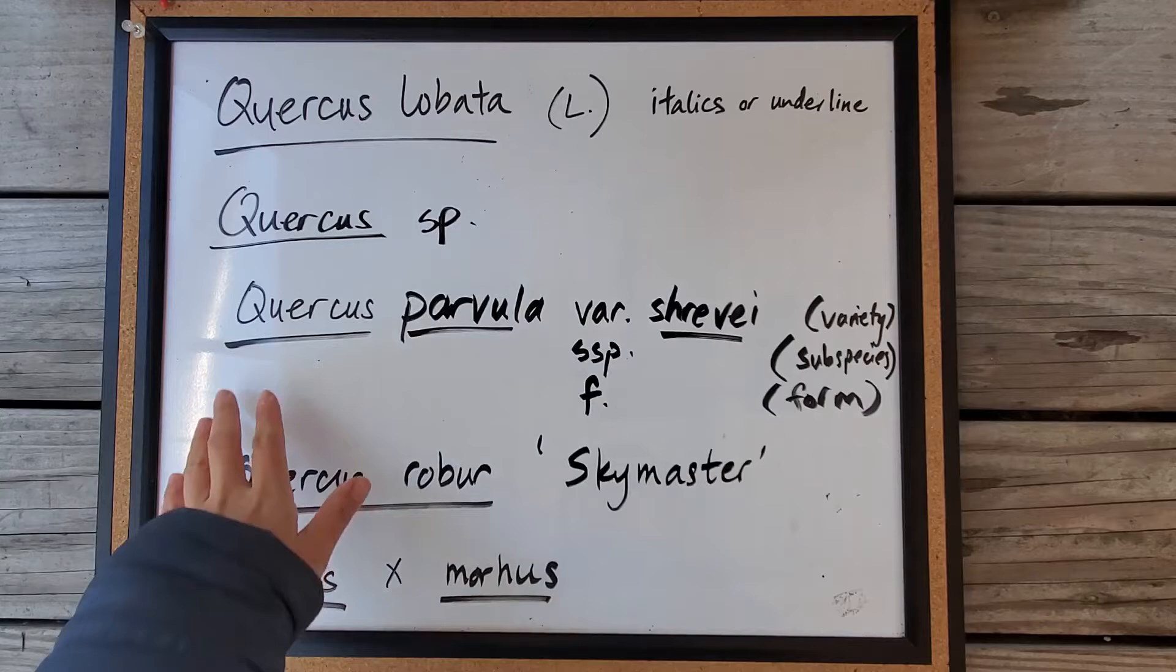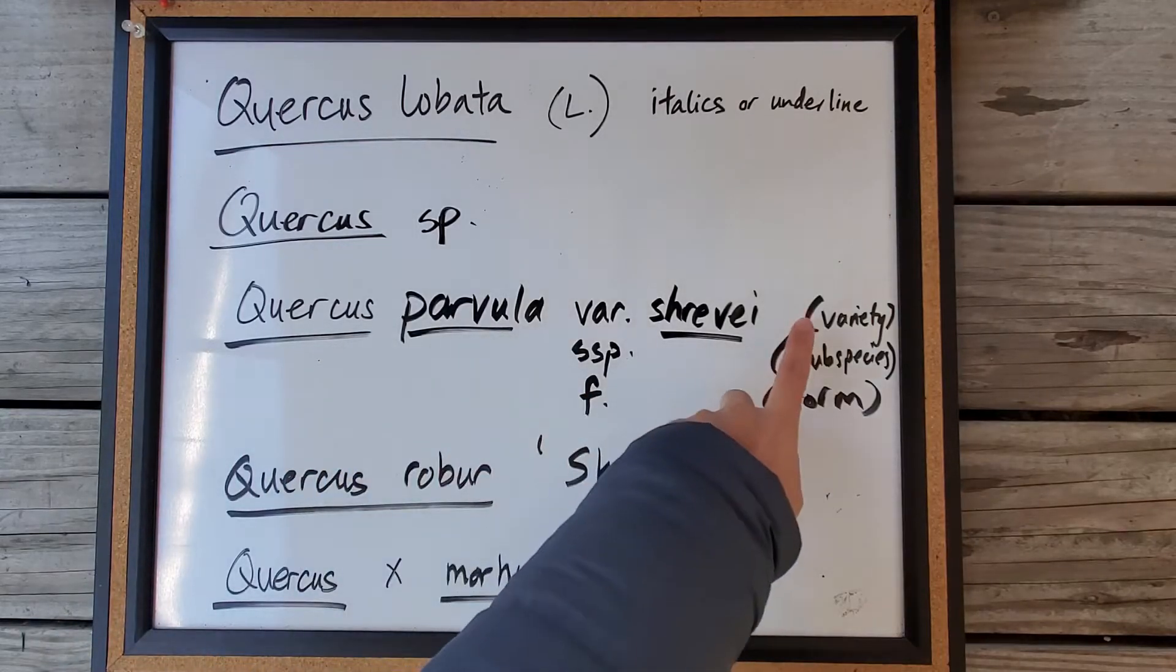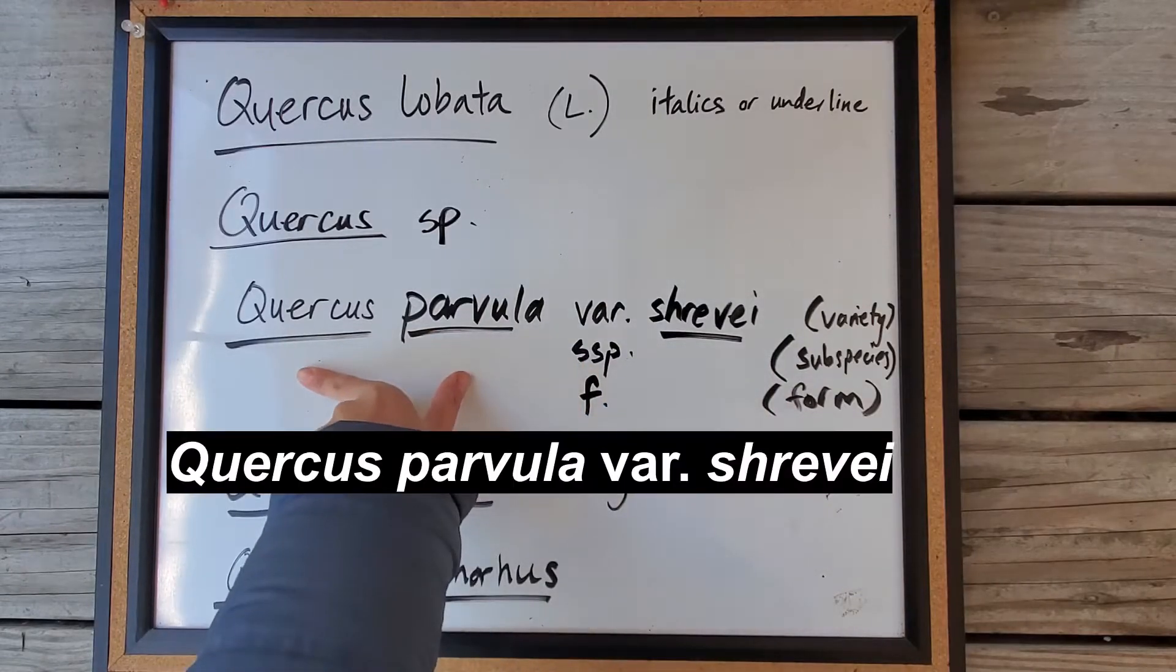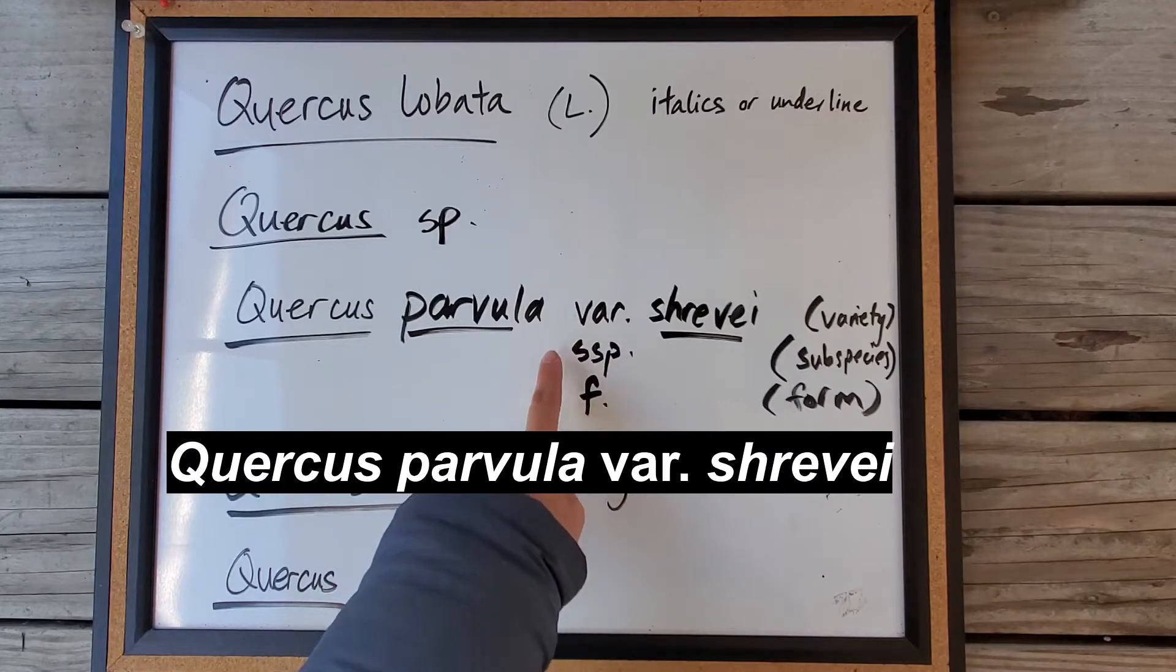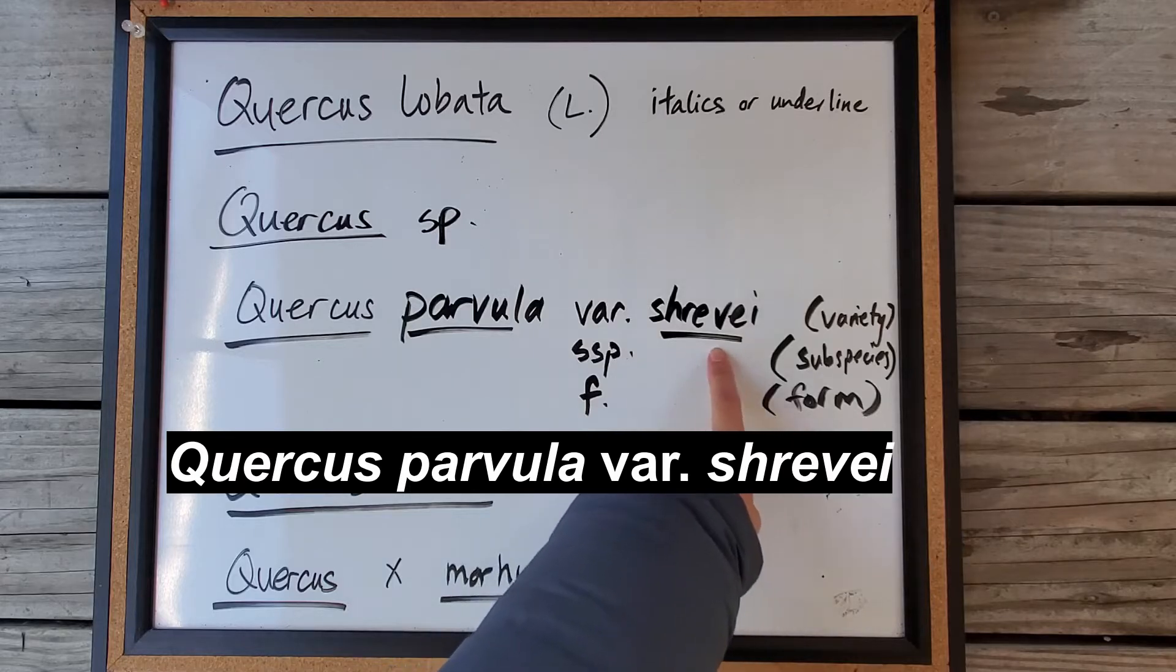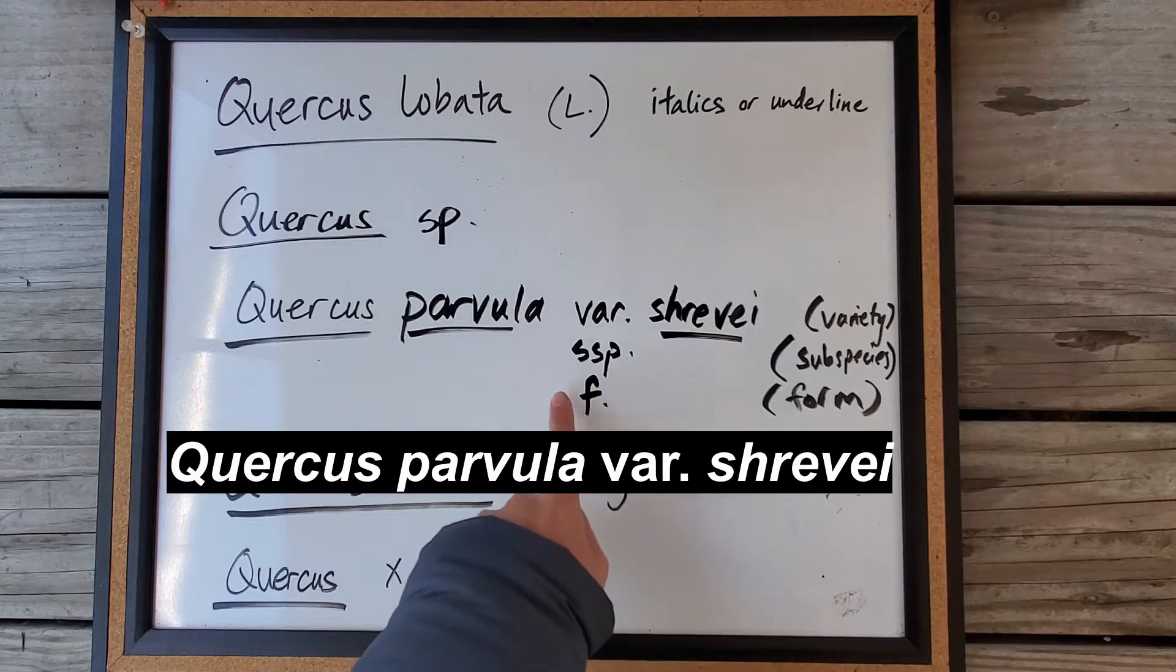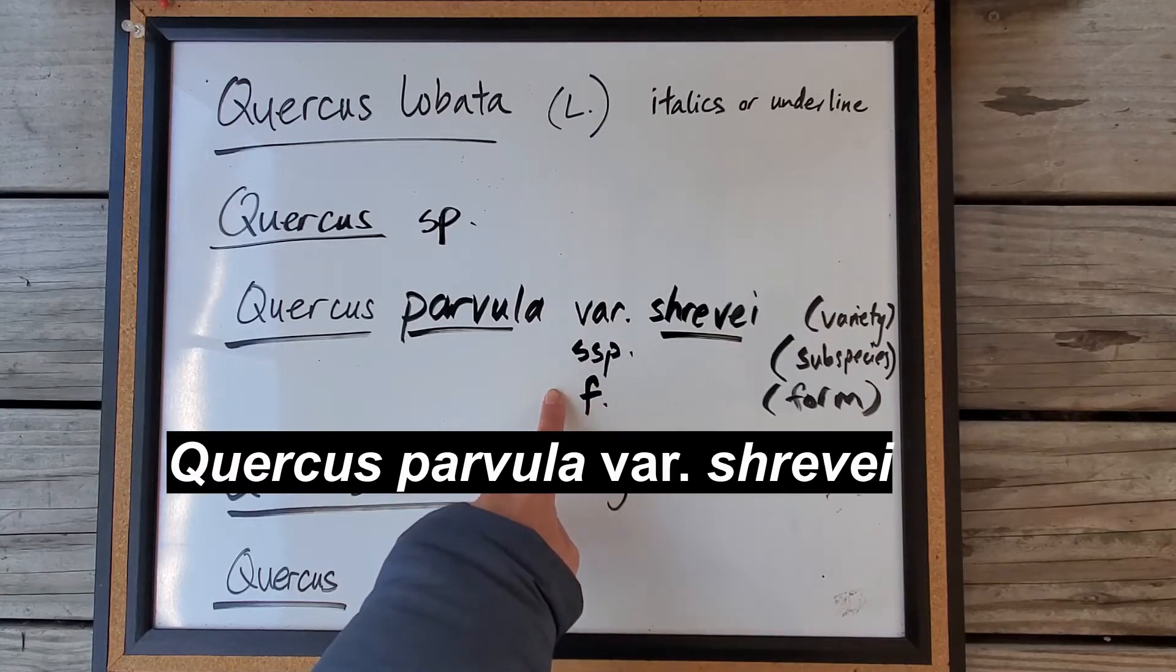If you have something that's a subcategory of the species, either a variety, a subspecies, or a form, you write it out like this. You write the species name, then you write var, ssp, or f, followed by a dot, and then you write the name of that variety, subspecies, or form. You italicize all of it except for the designation of variety, subspecies, or form.